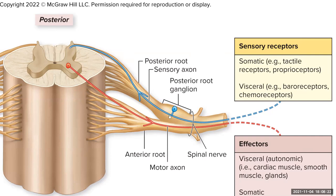As we get access to the posterior root, we have this bulge — that's our posterior root ganglion, also known as the dorsal root ganglion. That's where all the cell bodies are, because a ganglion is a cluster of cell bodies in the peripheral nervous system. A cluster of cell bodies in the central nervous system is called a nucleus — and David got that right. A nucleus is what we call a cluster of cell bodies in the central nervous system.